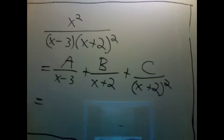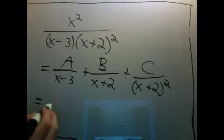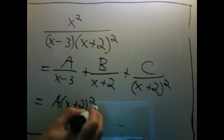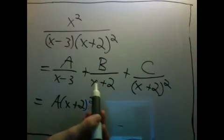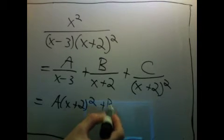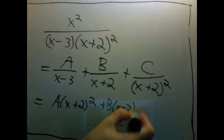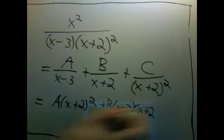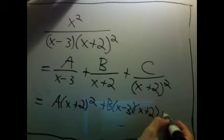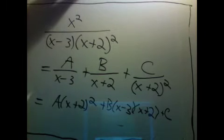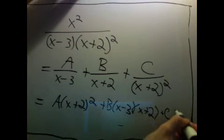So this term, I'm going to multiply the top and bottom by x plus 2 squared. This term, I'm going to multiply by x minus 3 times x plus 2. And then the last term, I just multiply by x plus 3, x minus 3, sorry.